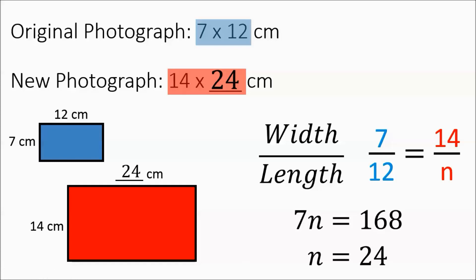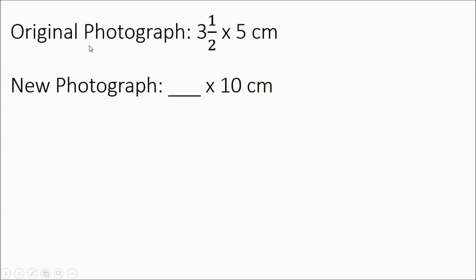We're going to move on. Here's our original photograph, 3 and a half by 5, and then we have our new photograph, something by 10. A lot of you might be able to do this one in your head as well, but it does have some fractions involved that might throw you off. We're going to go ahead and show the setup. In the original picture, we have the dimensions 3 and a half by 5. Now I've rewritten 3 and a half as 3.5.